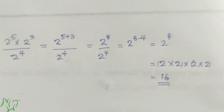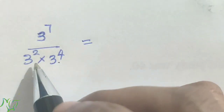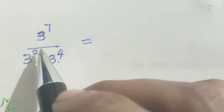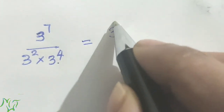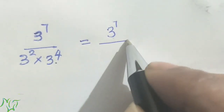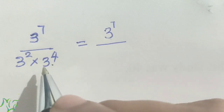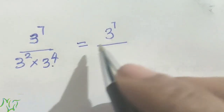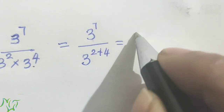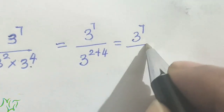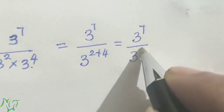Is it clear? Next problem: 3 raised to 7 by 3 squared into 3 raised to 4. Here we use the multiplication rule first in the denominator. So we write 3 raised to 7, then use multiplication rule: x raised to m plus n, that is 3 raised to 2 plus 4, giving us 3 raised to 7 by 3 raised to 6.